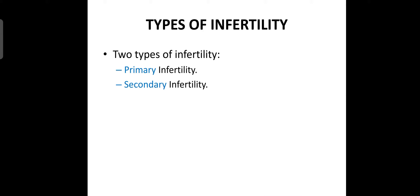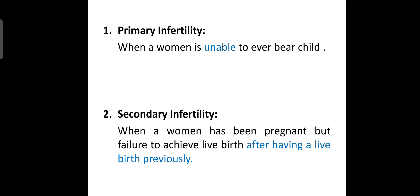There are two types of infertility: primary infertility and secondary infertility. Primary infertility means when a woman is unable to ever bear a child — she has never been pregnant. Secondary infertility means when a woman has been pregnant before but fails to achieve a live birth after a previous live birth — she got pregnant but is unable to continue the pregnancy.